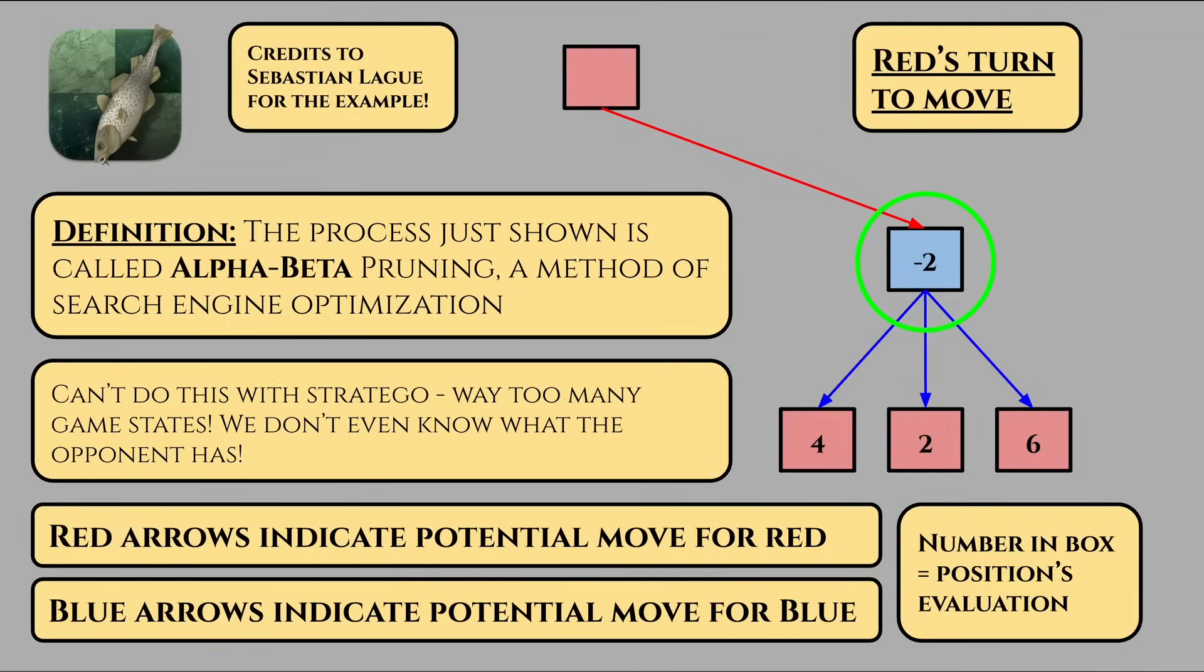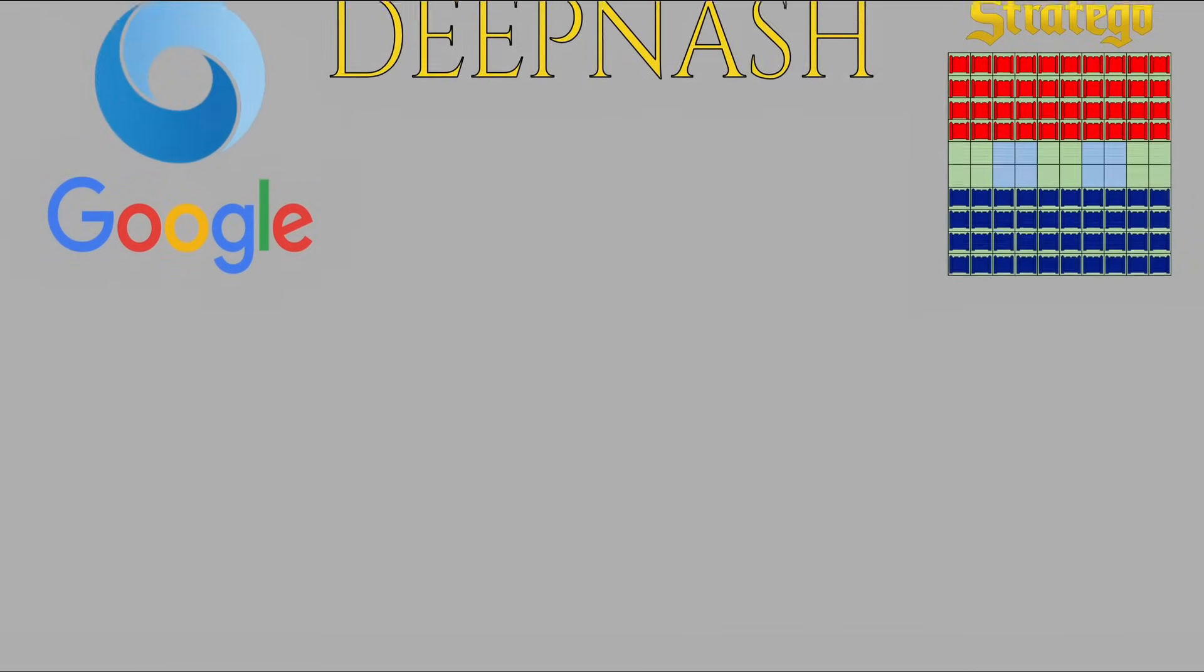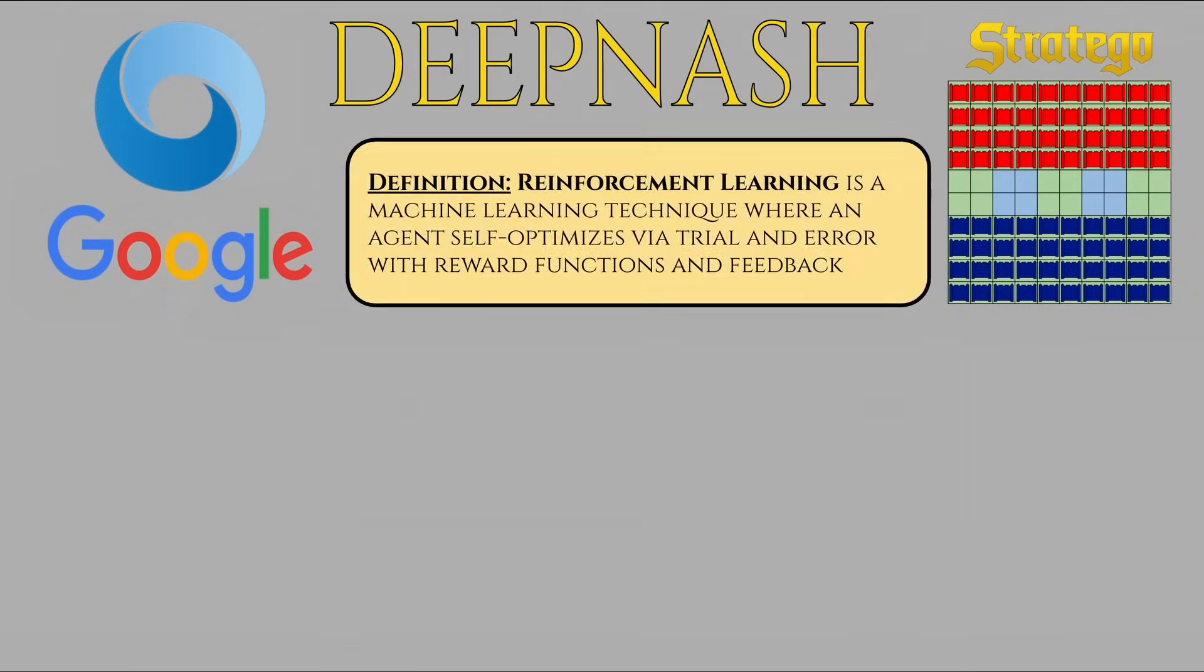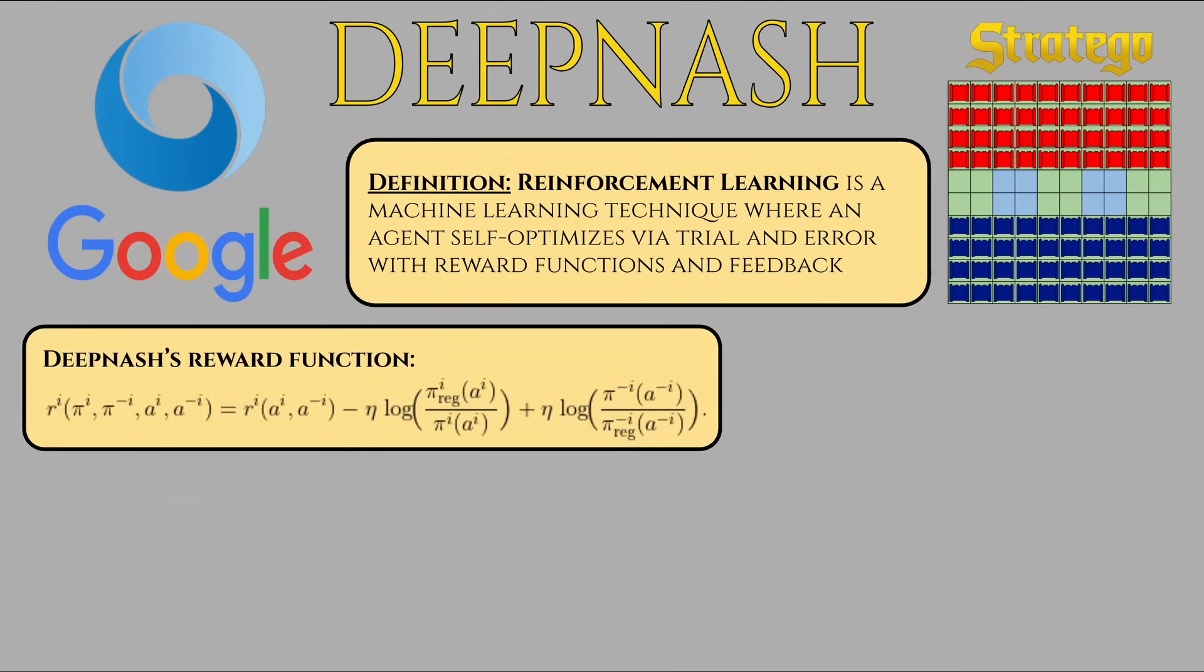So given all this, how did Google DeepMind's DeepNash achieve such consistent rates of success? The answer? Shockingly enough, no one really knows. Let's explain. From a high level, DeepNash is a prime example of reinforcement learning. Essentially, DeepNash plays against itself billions of times, noticing what strategies work and what don't. At first, moves might be completely random. However, the outcome of said move is graded with some reward function. From the paper, the reward function looks a little like this. This might look really big and scary, but component-wise, it's actually quite simple.